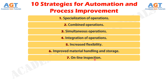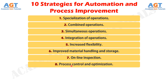Strategy No. 8: Process Control and Optimization. This includes a wide range of control schemes intended to operate the individual processes and associated equipment more efficiently. By this strategy, individual process times can be reduced and product quality can be improved.